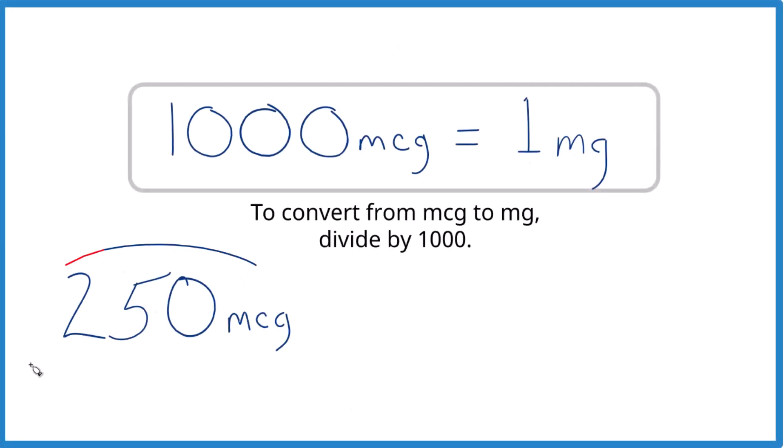If you need to convert 250 MCG, that's 250 micrograms to milligrams, here's how you do it. So there are 1,000 micrograms in one milligram. That's our conversion factor.